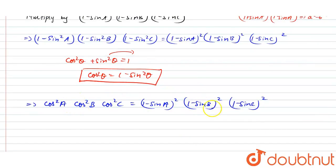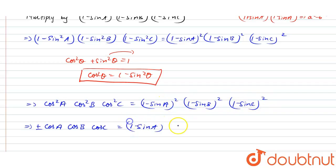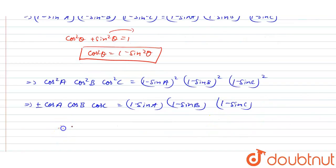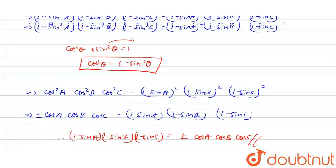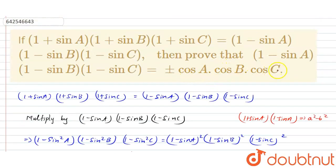Now I am going to take the square root on both sides. The square root and square will cancel, giving: ±cos A · cos B · cos C = (1 - sin A)(1 - sin B)(1 - sin C). Therefore, (1 - sin A)(1 - sin B)(1 - sin C) = ±cos A · cos B · cos C. So this is the answer. Hence the equation is proved.